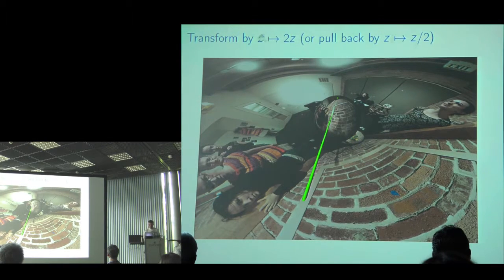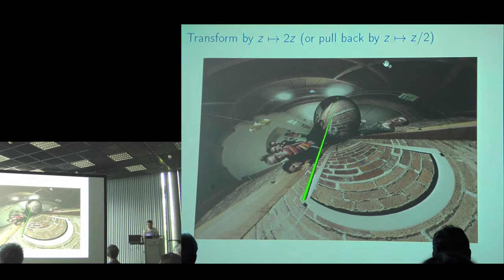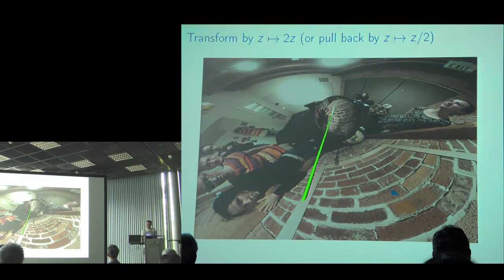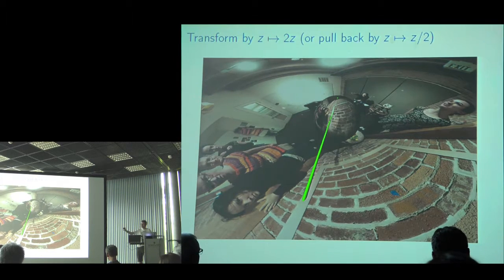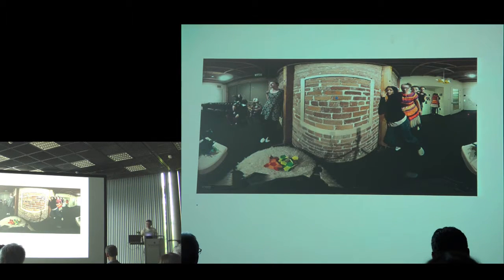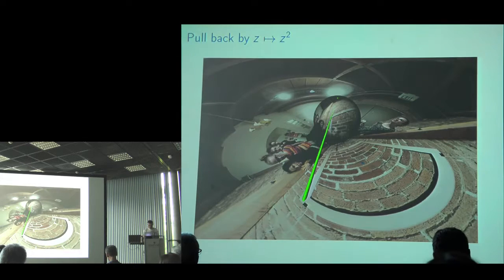A comment about the title: the natural way to think about this operation is scaling the plane up by two. But in terms of image processing, you always want to pull back by the inverse function. To generate the scaled image, you look at all the pixels, apply a function to those pixel locations, get locations on the sphere, and take colors from the original image. With vector images you push things forward; with pixel images you pull back — it's more efficient.